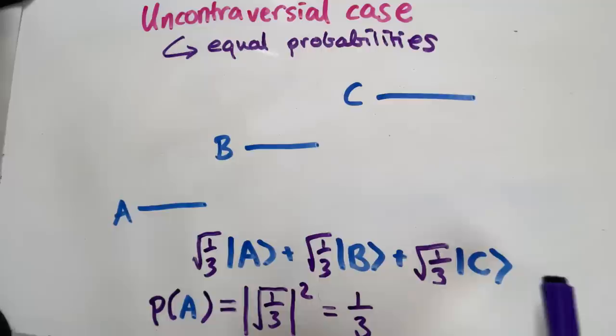But we didn't really need the Born rule to tell us that in this case. If we just looked at this original state, we can see that A, B, and C have exactly the same coefficients in front of them. And so whatever their probability is, all three of them ought to have exactly the same probability. So this is one case where the Born rule is clearly completely unnecessary. But can we now use the same kind of thinking to prove that the Born rule is unnecessary for more complicated cases?